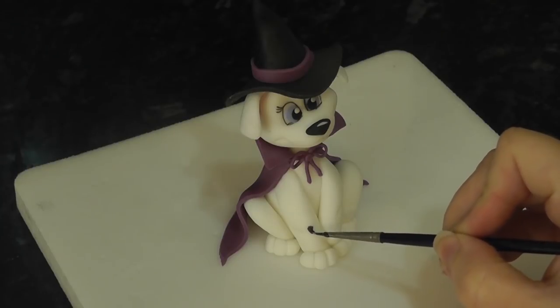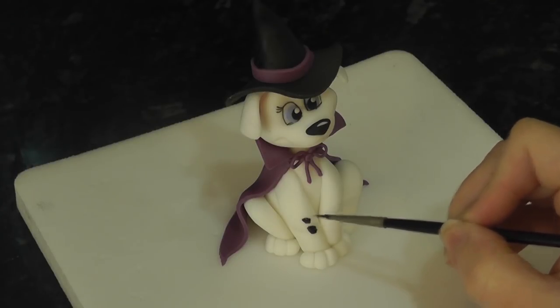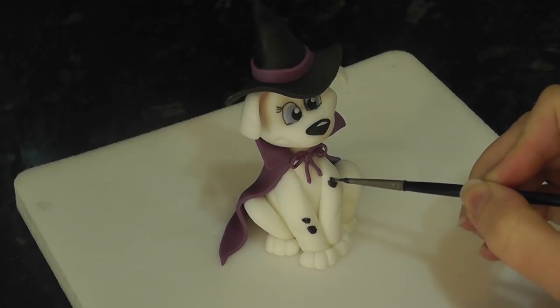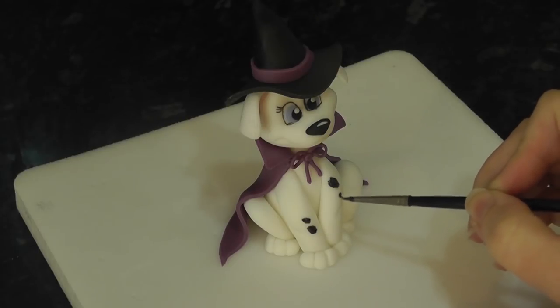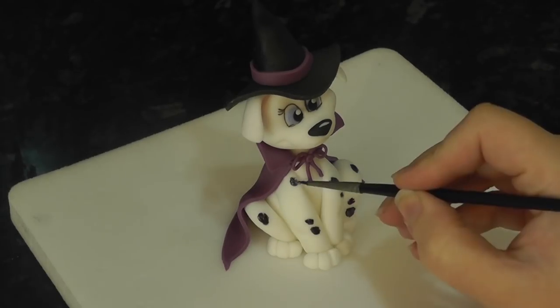Now you could leave her like this or make her in a different colour, but we are going to add black spots with some black rainbow dust paint and a fine paintbrush. Everything I use is in the description box below.